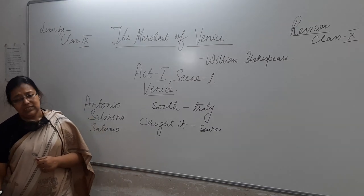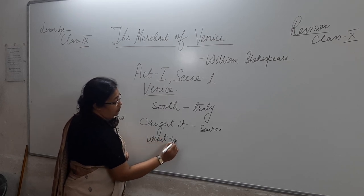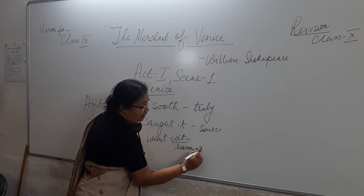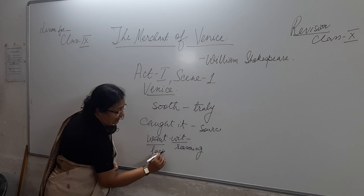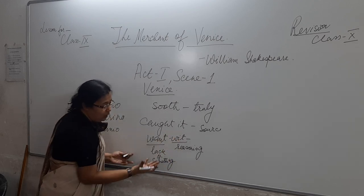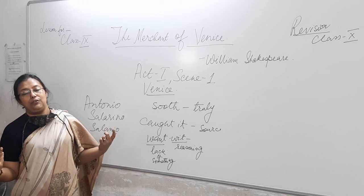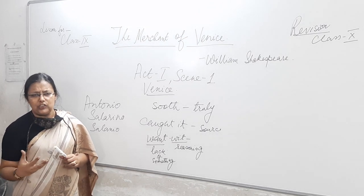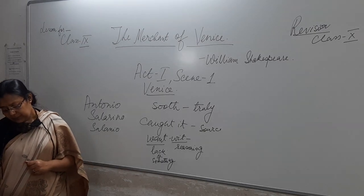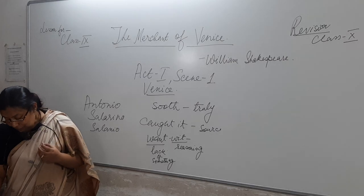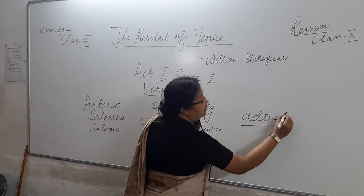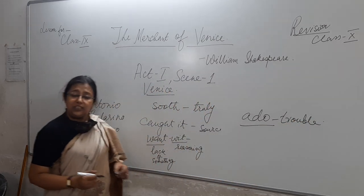So he's saying such a want-wit sadness makes of him that he has much ado to know himself. Ado is trouble — there is a play by Shakespeare called Much Ado About Nothing, meaning much trouble about nothing. Ado is trouble. So 'I have much trouble to know myself' — he is trying to find out why he is so sad. This is the first speech, the opening speech of Antonio. The play begins on such a note: three friends together. His friends are there with him — that is the optimistic side.